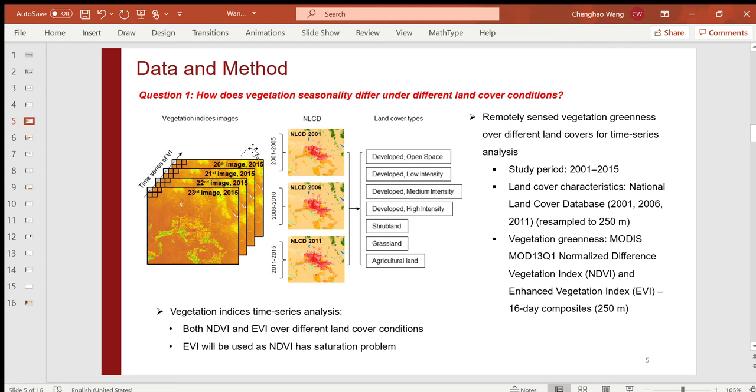Here I derived the time series of NDVI and EVI over shrubland, grassland, agricultural land, and four different types of urban areas. Note that I will only use EVI as a vegetation parameter in numerical simulations to better reflect the temporal dynamics of vegetation growth.